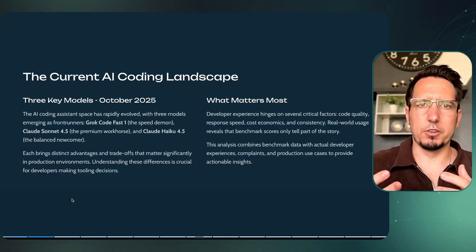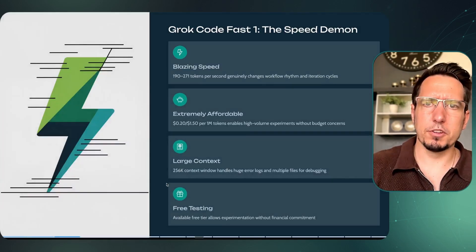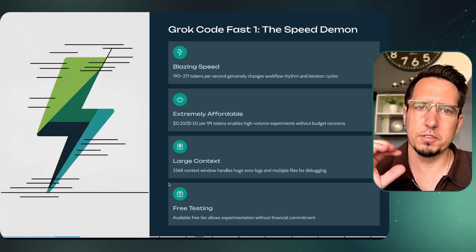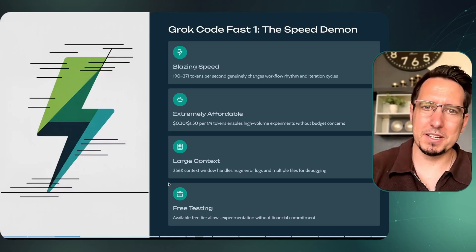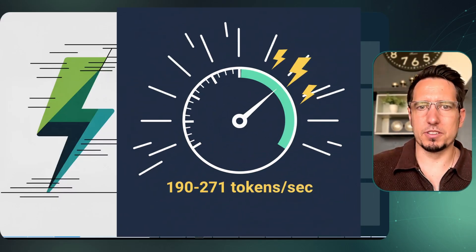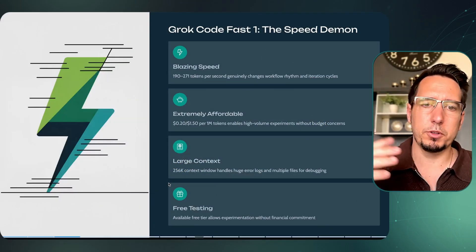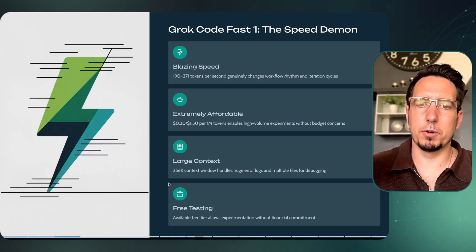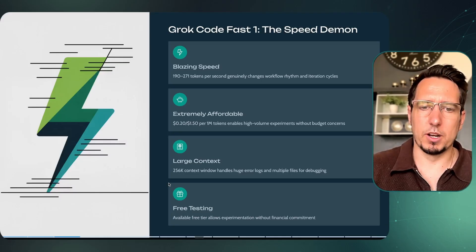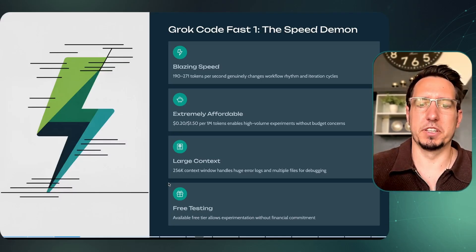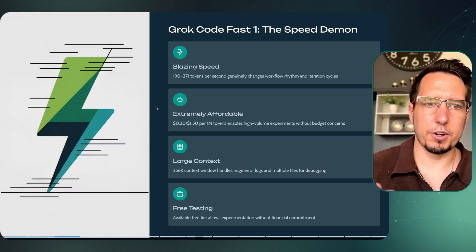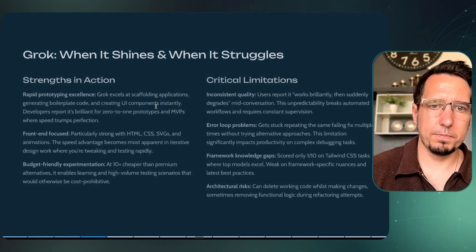We want to look at the advantages of each one and when you should actually consider using them in the real world. Just note some of this is based off research. Grok Code Fast — I'm calling it the speed demon — it's blazingly fast, anywhere between 190 to 271 tokens per second, and it's extremely affordable at 20 cents to one dollar fifty per million tokens. You can try it for free, and it has a large context window of up to 256 kilobytes.